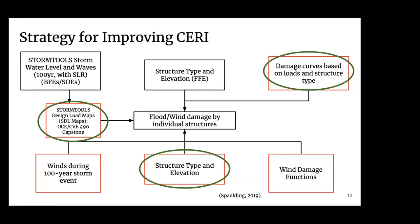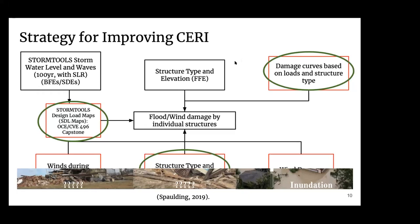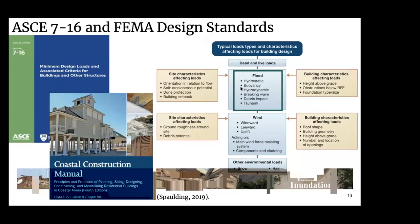Over the past two semesters, we worked on improving the CIRRI flowchart. The boxes in red are what we worked on over the past two semesters, and what's circled in green is what's highlighted in this presentation — mainly what we worked on this semester. We worked on developing design load maps and damage curves based on loads for different structure types. We followed the codes within ASCE 7-16 and the FEMA Coastal Construction Manual to compute our design loads. The flood loads we focused on were hydrostatic, hydrodynamic, wave, and debris loads.